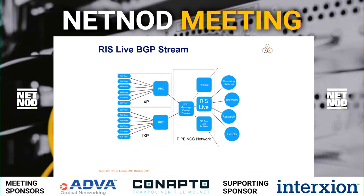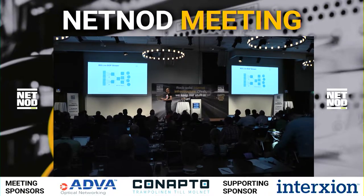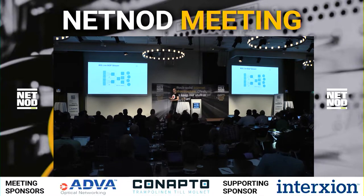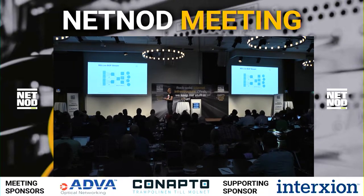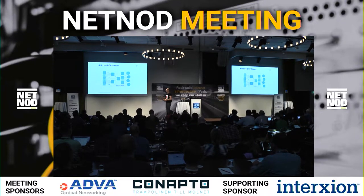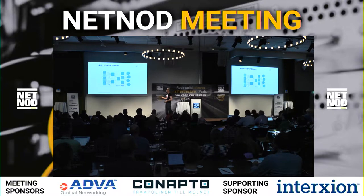There's a complete labs article on labs.ripe.net. What it amounts to is we have a backend that gets all the data from the RIS collectors and emits it over WebSockets and over SSE — server-sent events. You can write scripts for that; there are two or three Python libraries that can ingest the data and you can do whatever you want with it. You can also stream it into browsers. If you want more information, please talk to me.